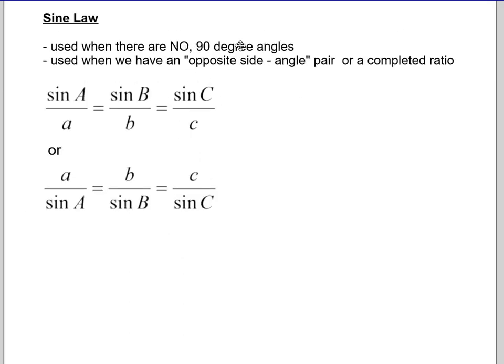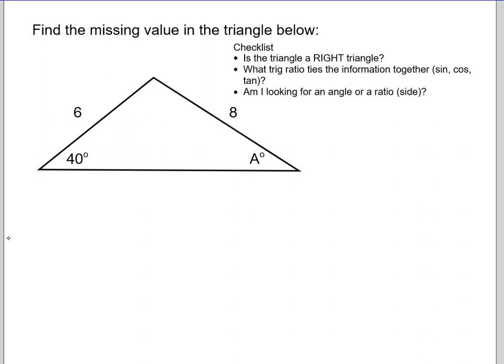When there are no 90 degree angles, then we have to move into our opposite side angle pair, or looking for a completed ratio with our sine law. So this is our sine law, and we try and set up sine law so that our unknowns are on top. Unknowns on top. That will make our algebra easier. So when we look at a triangle like this, I check for a right angle. There's no right angle. What trig ratio ties information together? Well, I can't do that because there's no right angle. So all of this goes away because of the lack of a right angle.